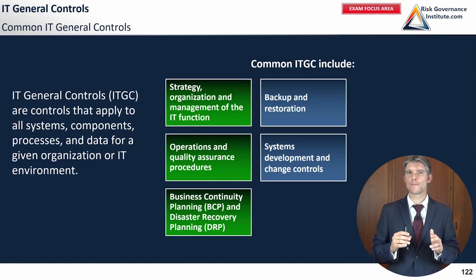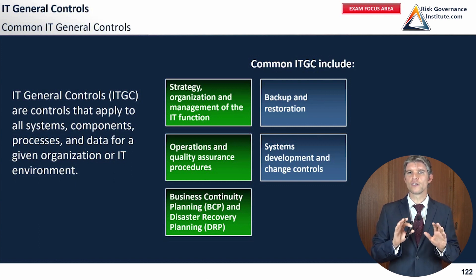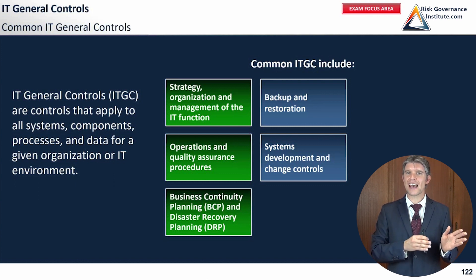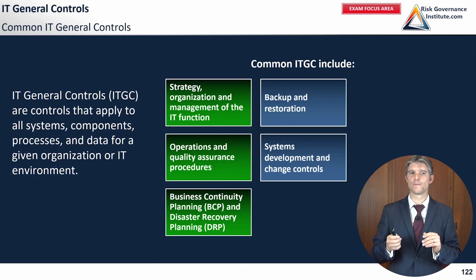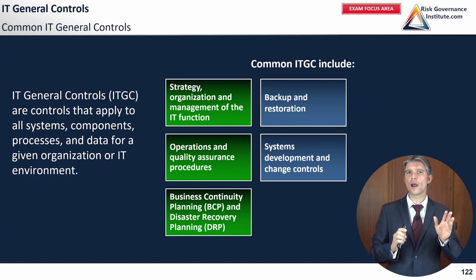Systems development and change controls require that changes to a system are properly approved. Without proper approval, a developer could introduce a fraudulent change — for example, a backdoor allowing system access without credentials. Changes must be approved and then verified afterward. Change control and systems development is honestly beyond the scope of the CIA Part 3 exam, but it's good to know about at an awareness level.